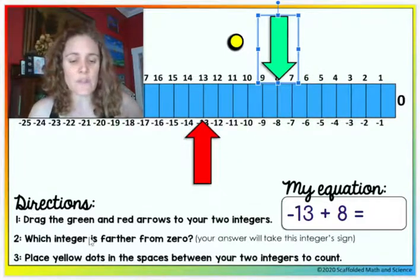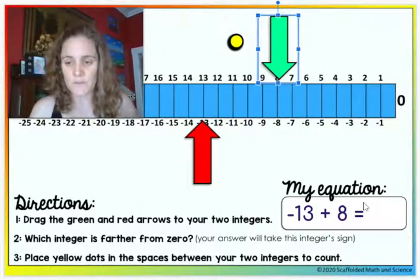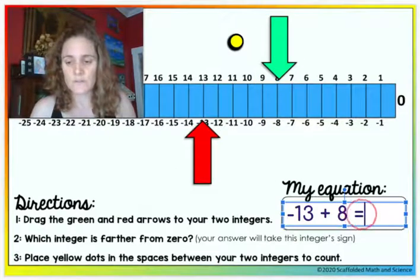And we have to ask ourselves now which integer is farther from zero, so we can see that negative 13 is farther from zero. So our answer is going to be negative.